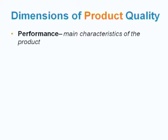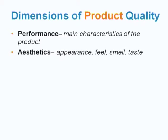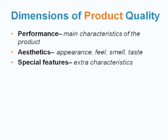The next topic is the dimensions of product quality. For product quality, it is often assessed on the following dimensions. The first is performance — the main characteristic of the product. Another is aesthetics — appearance, feel, smell, taste — sometimes referring to the exterior or interior design of the product. Another dimension is special features, or extra characteristics of the product.